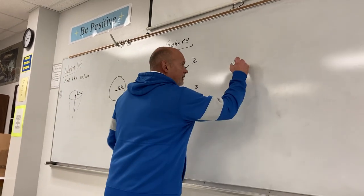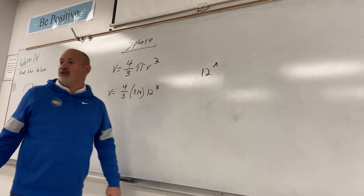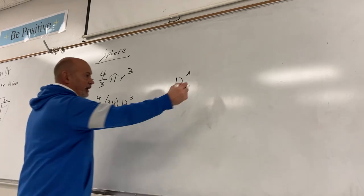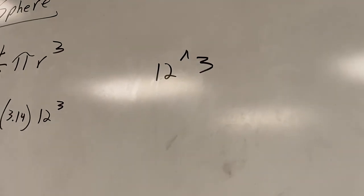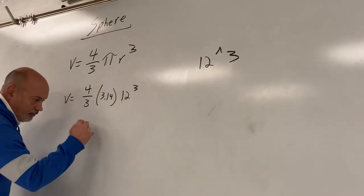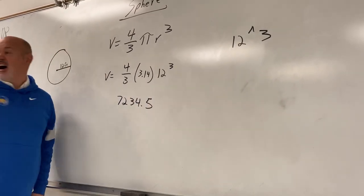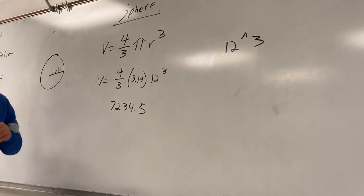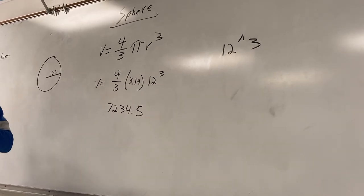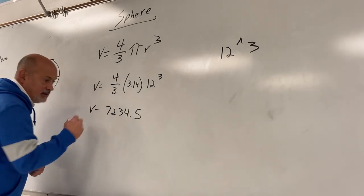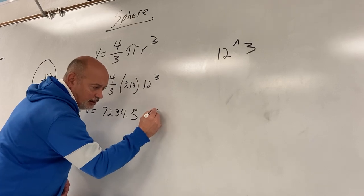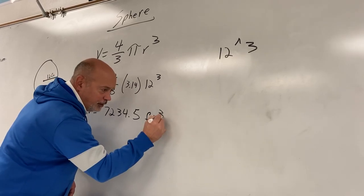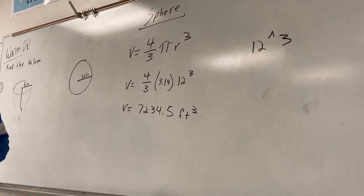The only thing you can screw up on this is to type it in wrong on the calculator. Type it in exactly as you see it: four divided by three, times 3.14, times 12 to the third. To type the exponent, hit that little button that looks like a little rooftop, then hit three. Type it all in and hit enter. Lizzie, what do you got? 7,234.5. Does everybody agree? Yes. And since it's volume, what do we put? Feet cubed. It's a three-dimensional picture.